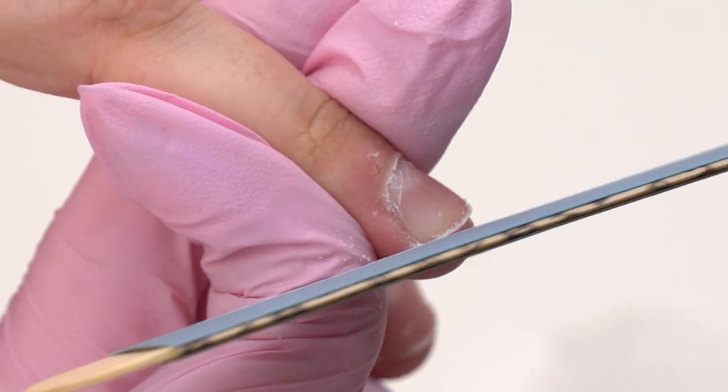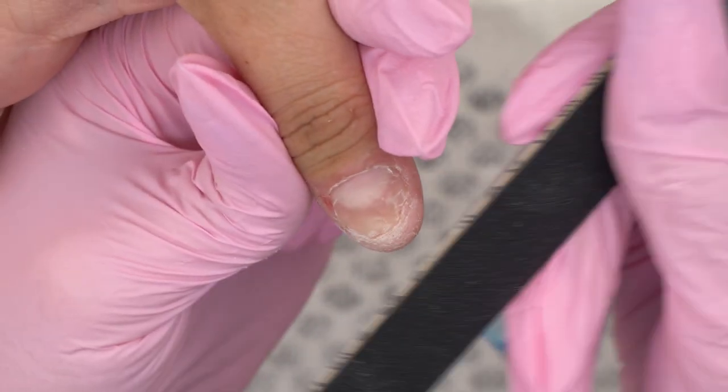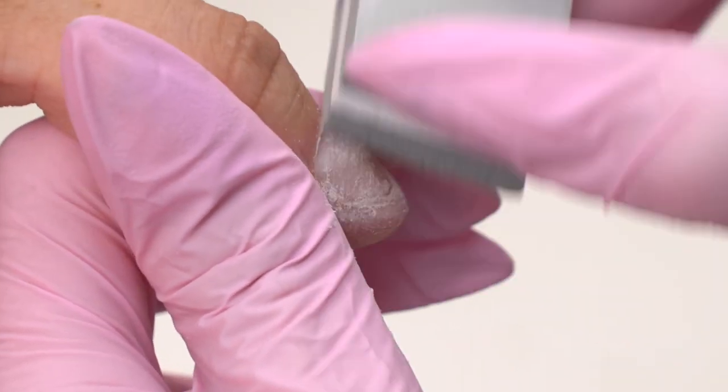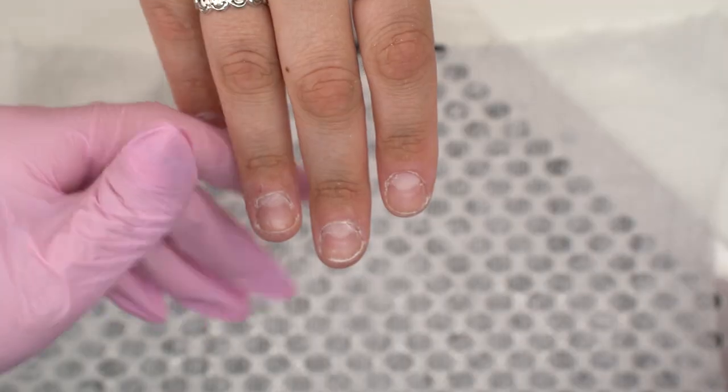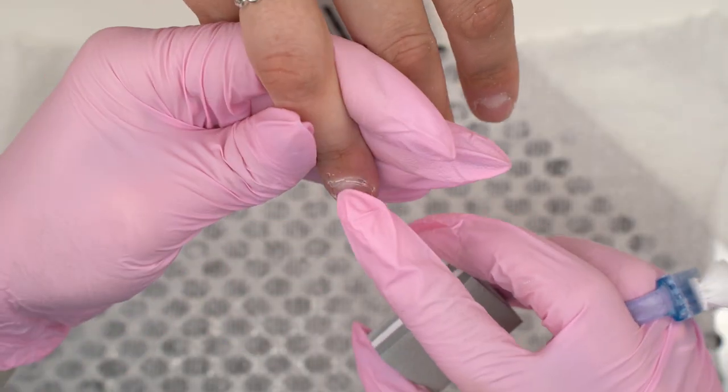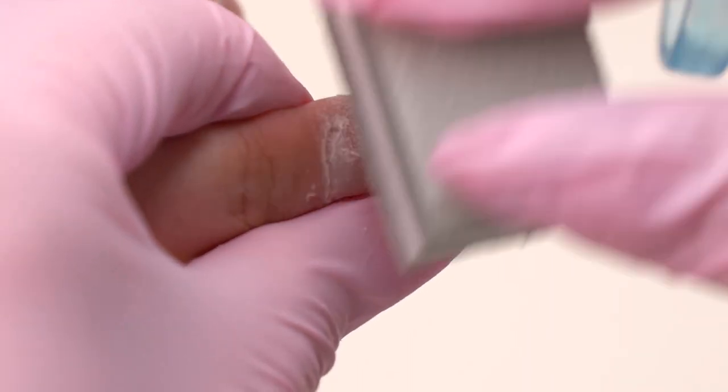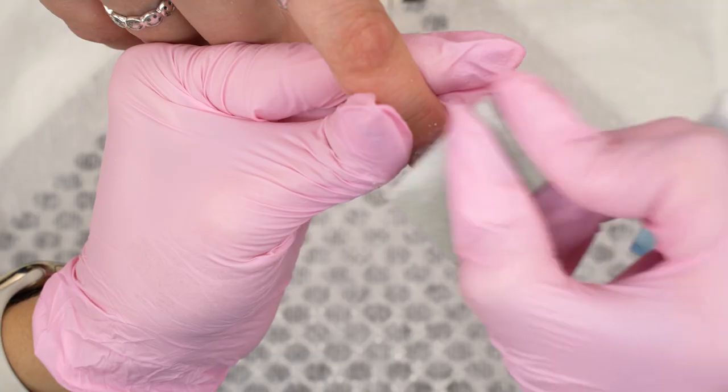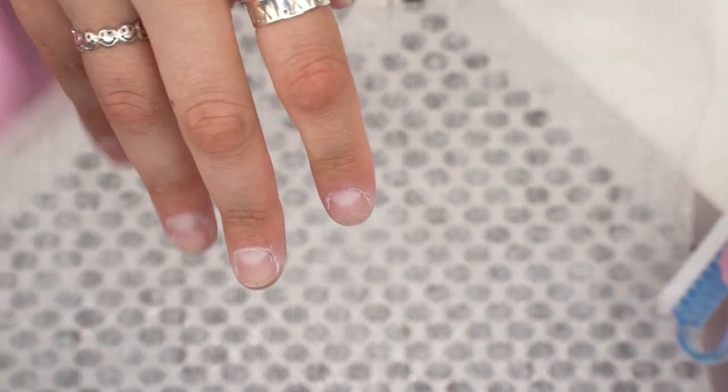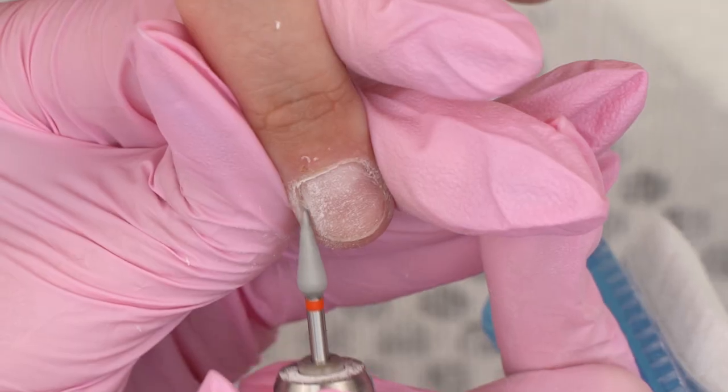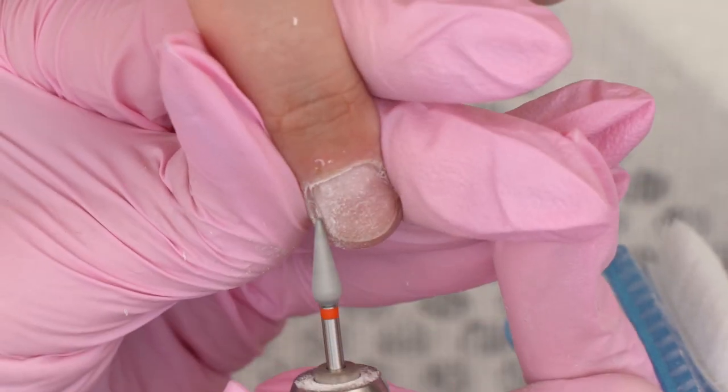I remove the free edge with a file and polish the surface with a harsh buffer or a file. These white lines are pterygium, the skin that is spreading onto the nail plate. And I have pushed the cuticle with an orange stick to reveal it. I partly remove it with a buffer and touch it up with the drill bit. Make sure to go with the buffer first.